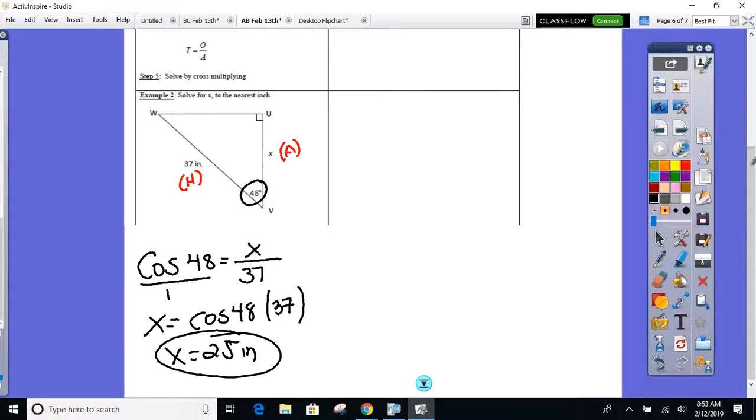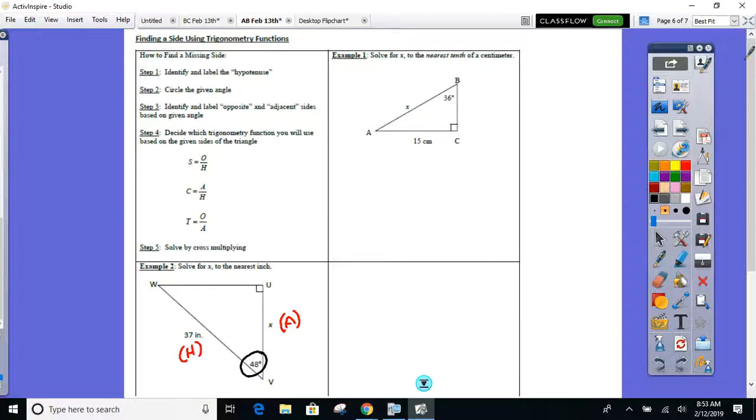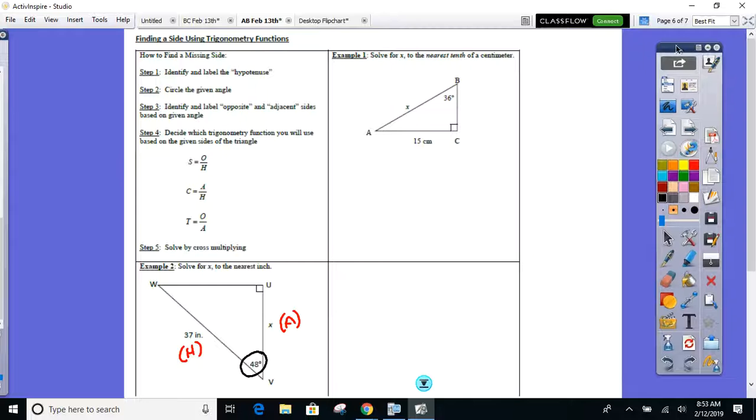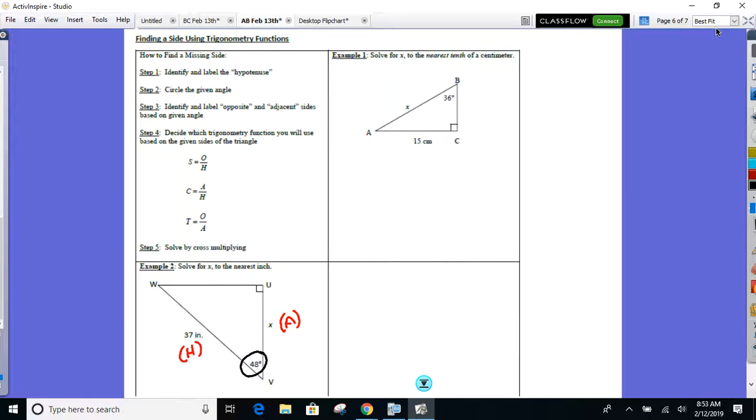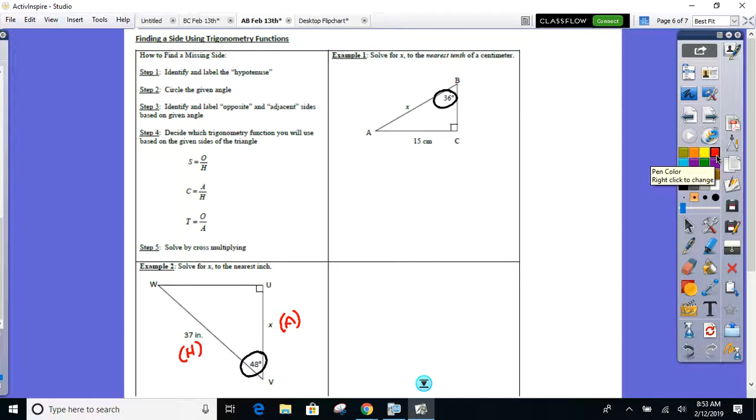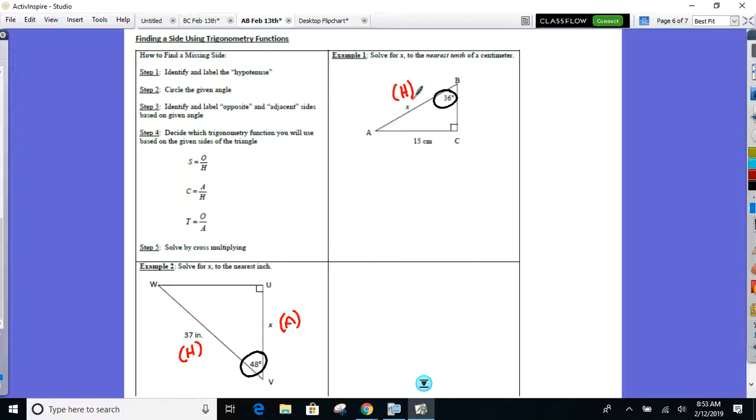Let me see how much of number one we can get through right now. Go back to number one. Right up here. Number one. Still on the same page. Everyone see the acute angle? 36. What's the X? What are you going to label side X as? Hypotenuse. And what are you going to label the 15 as? That is the opposite side.